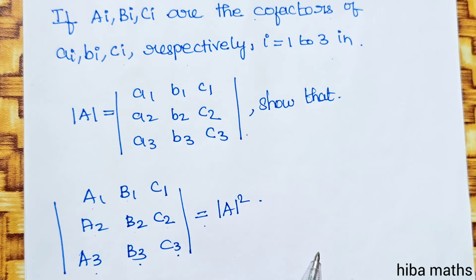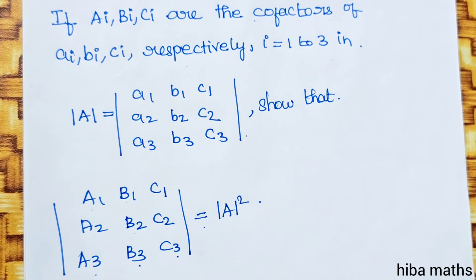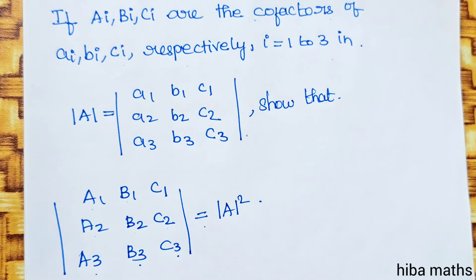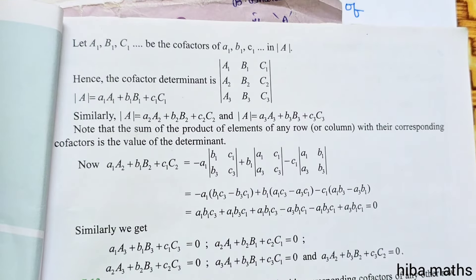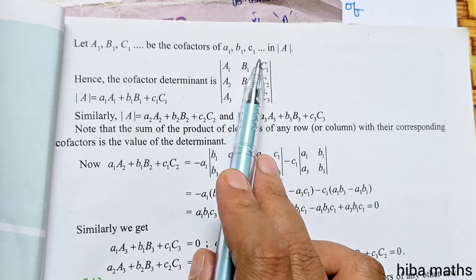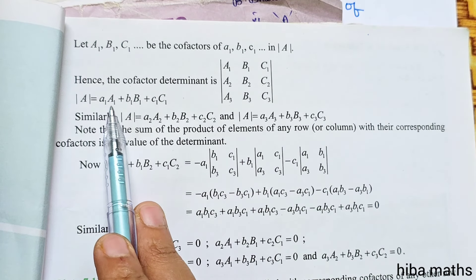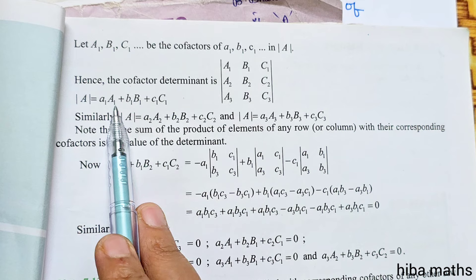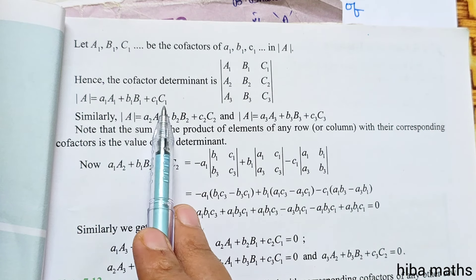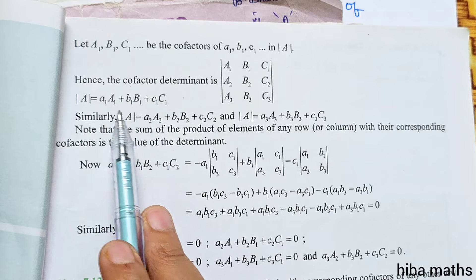So in this example, I am going to give you an explanation. Let's first look at the proof. Consider A1 B1 C1 equals modulus of A squared. Now modulus of A is A1 B1 C1, A2 B2 C2, A3 B3 C3.